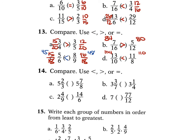For problem 14, comparing mixed numbers. For A, whole numbers are the same, so cross multiply the fractions: 8 times 2 is 16, 3 times 7 is 21. Since 21 is greater, 7 eighths is larger — so 5 and 7 eighths is greater than 5 and 2 thirds. For B, whole numbers are the same: 7 times 1 is 7, 3 times 4 is 12. Since 12 is greater, 3 and 3 sevenths is greater than 3 and 1 fourth.